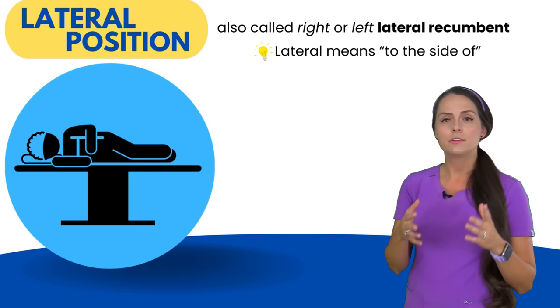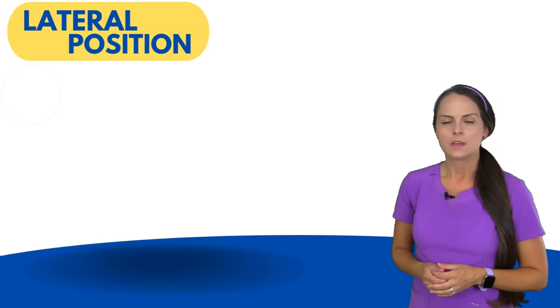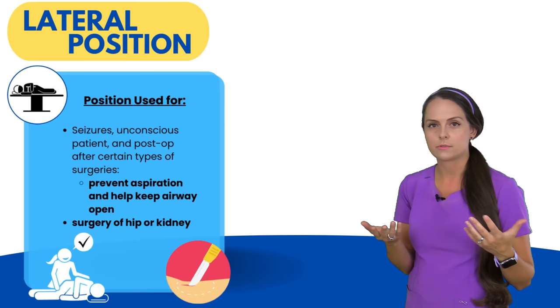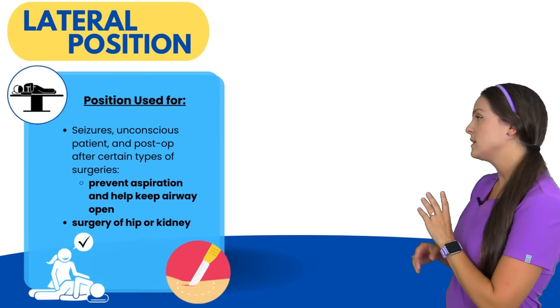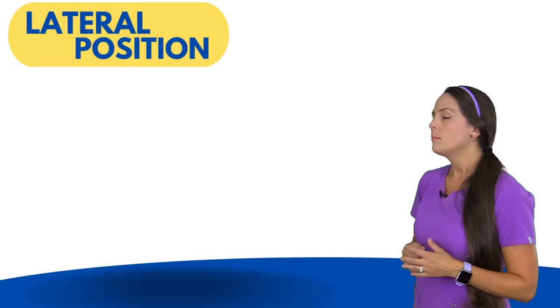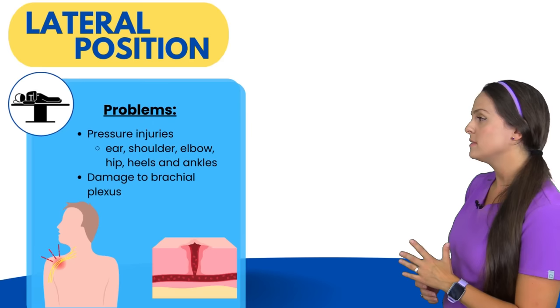Next is the lateral position, also referred to as right or left lateral recumbent. 'Lateral' means to the side, so this position involves being on either the left or right side. We use this position when a patient is having a seizure, is unconscious, or has had surgery involving a lot of drainage — like throat surgery — to prevent aspiration. It helps keep the airway open, which is critical for unconscious patients and those having seizures. It can also be used during hip and kidney surgery. Pressure injury risks include the ears, shoulder, elbow, hip, knees, and ankles, and the brachial plexus nerves in the shoulder can also be damaged.